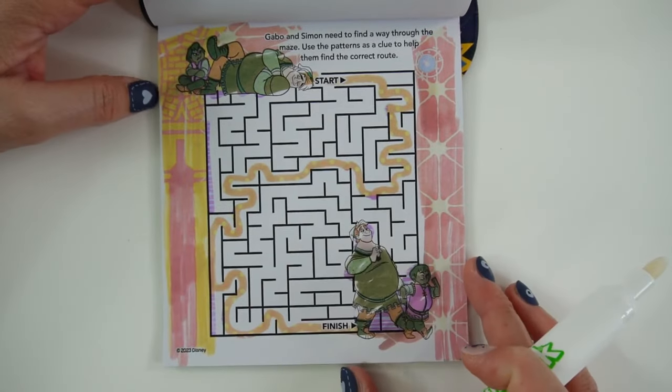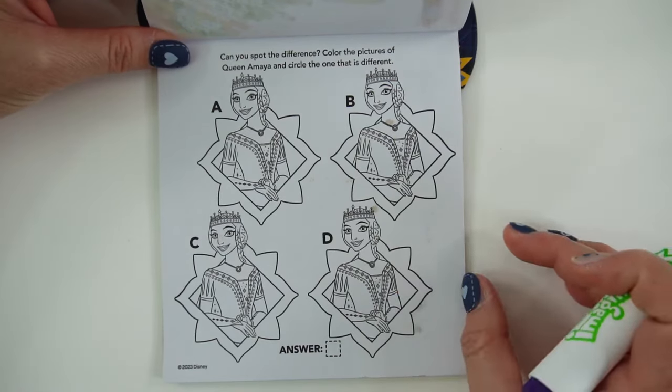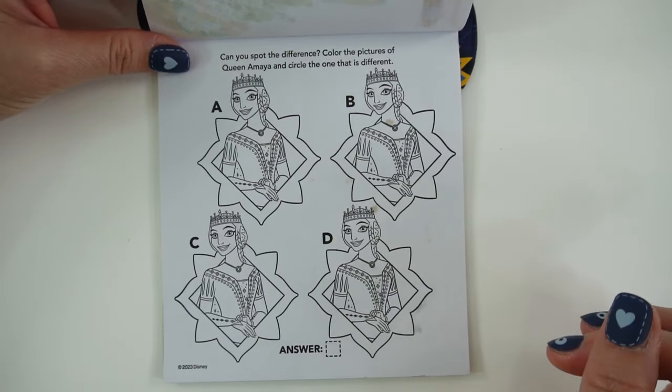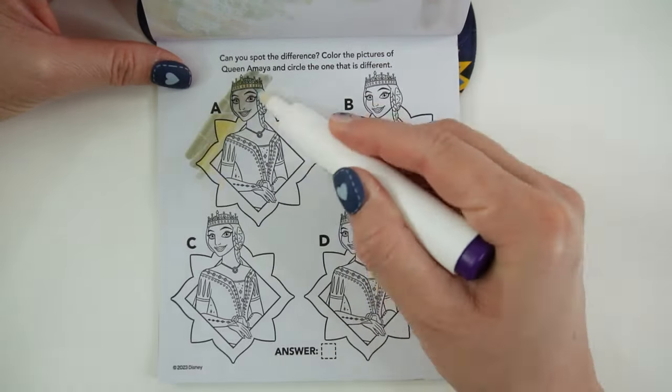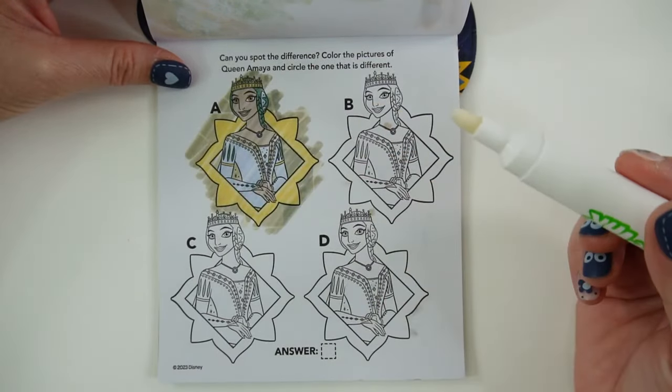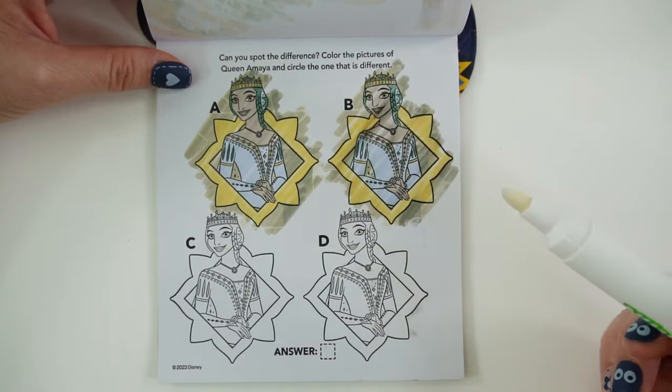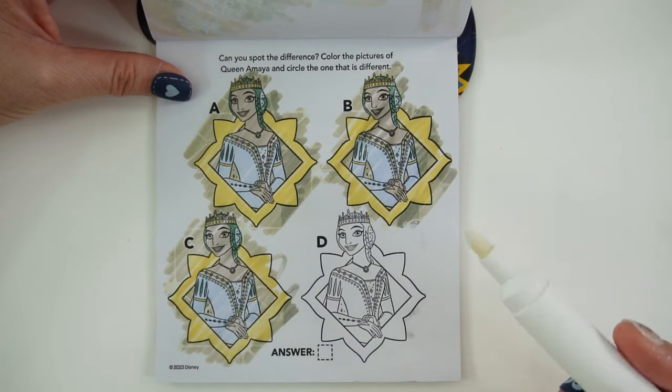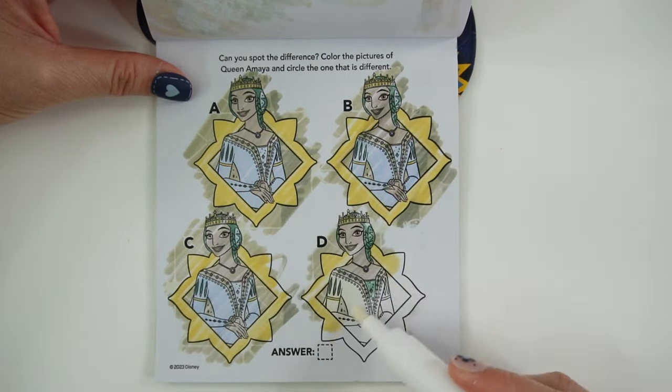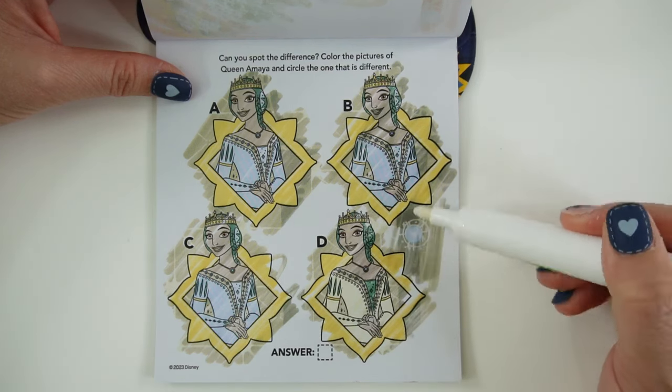I just love the colorful background. All right, can you spot the difference? Color the pictures of Queen Amaya and circle the one that is different. All right, so we got four. Here's our first one. Here's our second one. This one looks the same. C also looks the same. D is different. Her dress is yellow. And here's the wish.